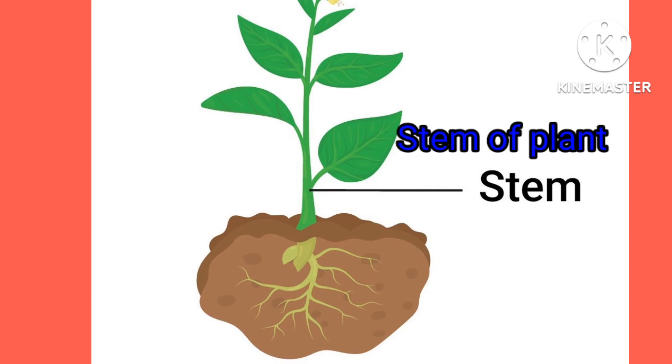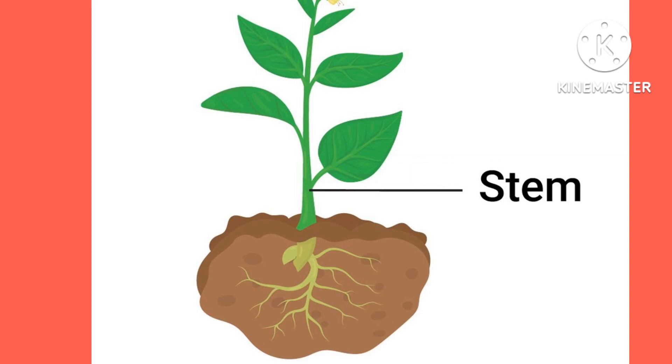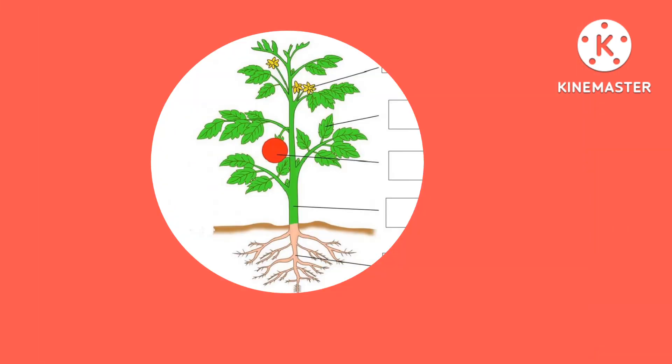Now, stem — the stem grows upward from the ground. It is the main part of the shoot. Leaves, flowers, and fruits include the shoot system. The stem can be strong or weak. Trees like mango and neem have a strong woody stem or trunk. Plants like grapevine, bean, and pea have a soft and weak stem and need support to stay upright.